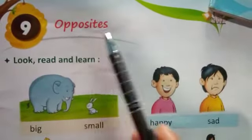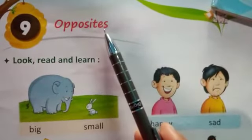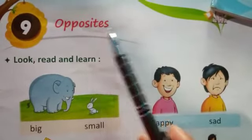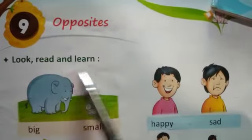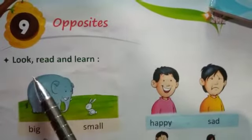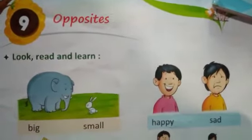Opposites. Opposites means ulta. Look, read and learn. Dekho, padho aur seekho.